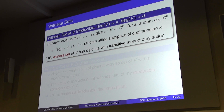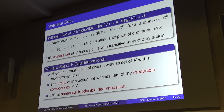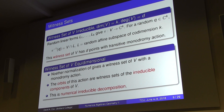You can't necessarily reconstruct the entire variety from a witness set, but you know something interesting. Now suppose V is equidimensional — every irreducible component has the same dimension. You can still do Noether normalization and get a witness set with a monodromy action, but the monodromy action will no longer be transitive. The orbits give the irreducible components — this is called a numerical irreducible decomposition.